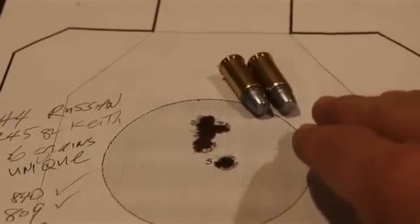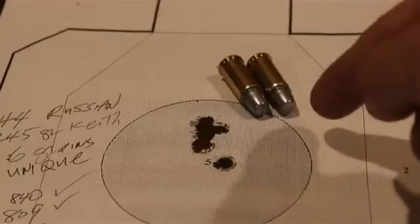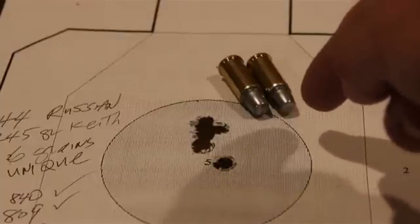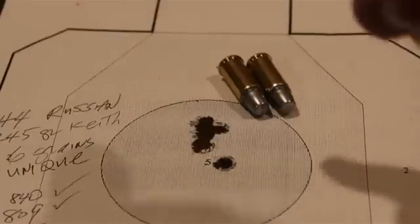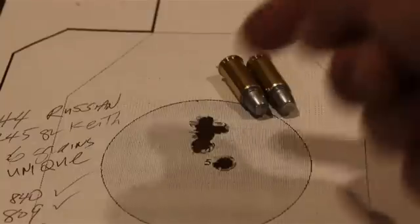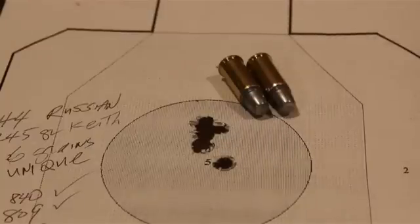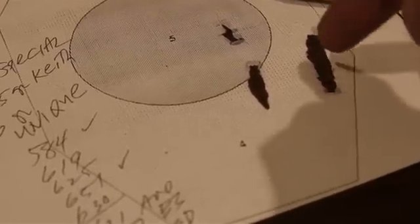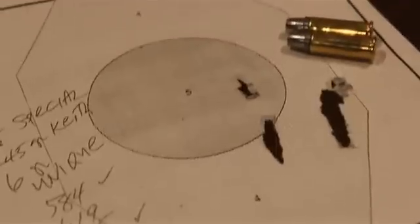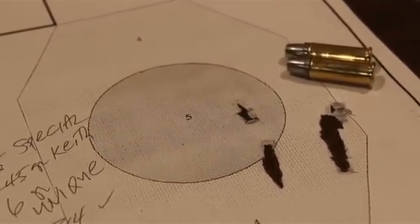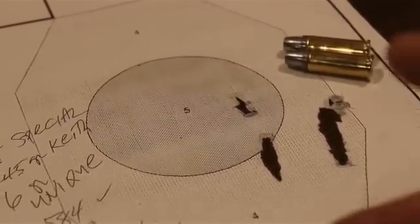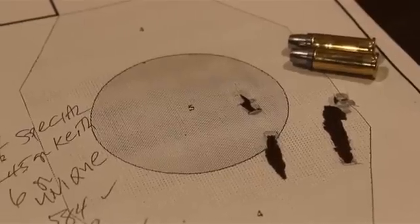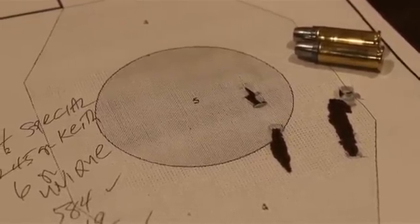Same powder charge and we got 826 feet per second average using the Keith bullet and six grains of Unique - good accuracy with the 44 Russian. Then we shot the same powder charge and only got 621 feet per second average plus bad accuracy, in fact some key-holing with the 44 Special. That's a difference of 200 feet per second and that seems almost unreasonable.